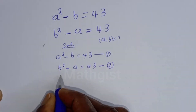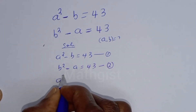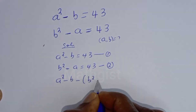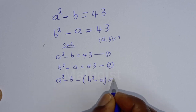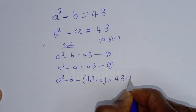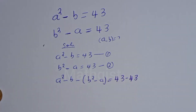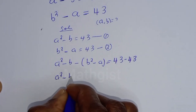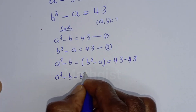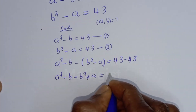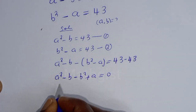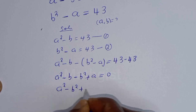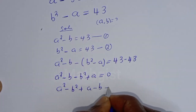Let's subtract equation 1 from equation 2. That is, A squared minus B minus (B squared minus A) is equal to 43 minus 43. This gives A squared minus B minus B squared plus A is equal to 0, which rearranges to A squared minus B squared plus A minus B is equal to 0.